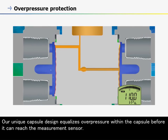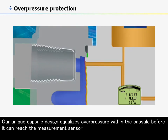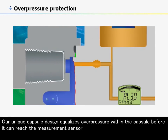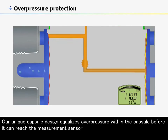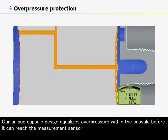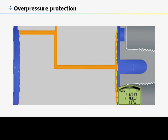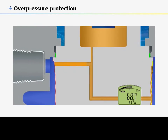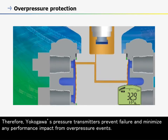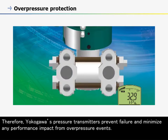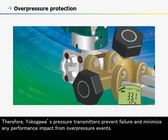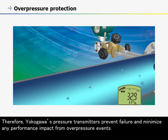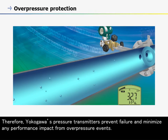Our unique capsule design equalizes overpressure within the capsule before it can reach the measurement sensor. Therefore, Yokogawa's pressure transmitters prevent failure and minimize any performance impact from overpressure events.